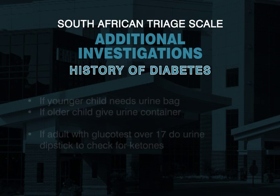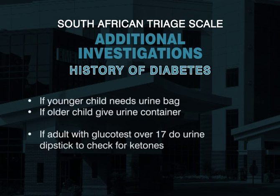If it's a younger child, you need a urine bag. For an older child, give a urine container. If it's an adult with a glucose over 17, do a urine dipstick to check for ketones.